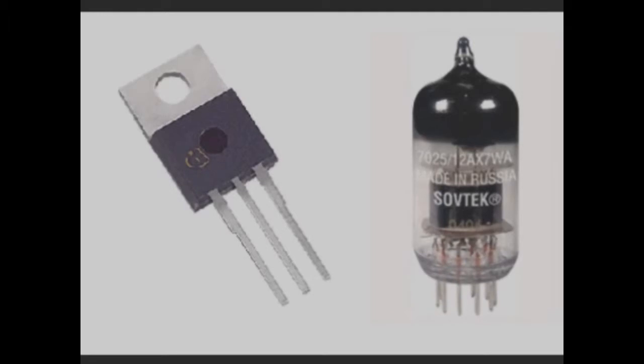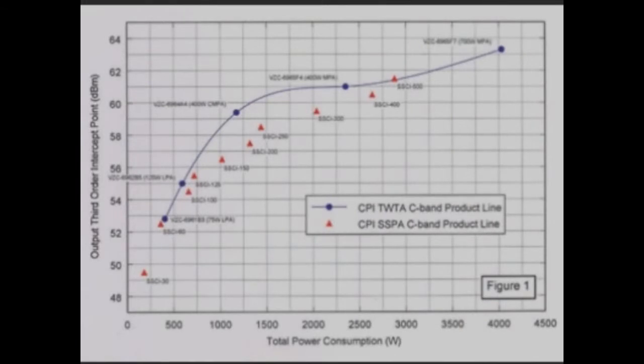The first major advantage to using tubes instead of transistors is a linearity. A very important point to note is the third order intercept point. For the tube amp, it is pushed much higher than the transistor, which contributes to a more linear operation.